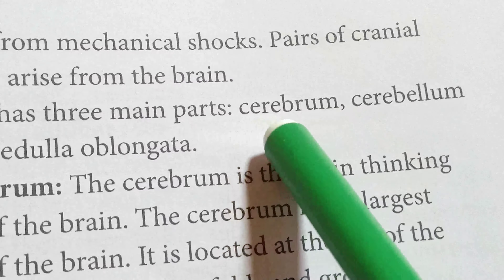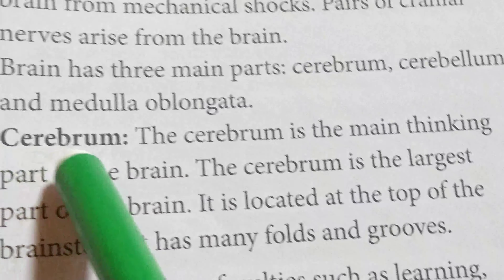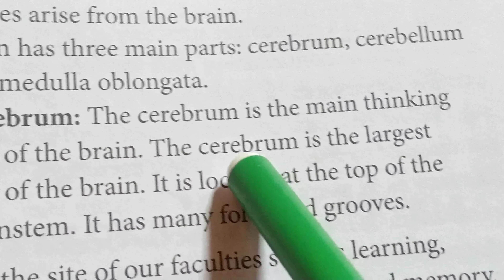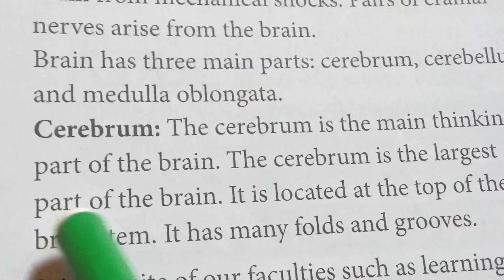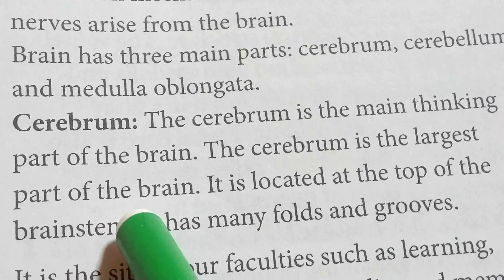The cerebrum is the main thinking part of the brain — the main coordinating and controlling center. The cerebrum is the largest part of the brain; approximately 75% of the brain is occupied by the cerebrum.